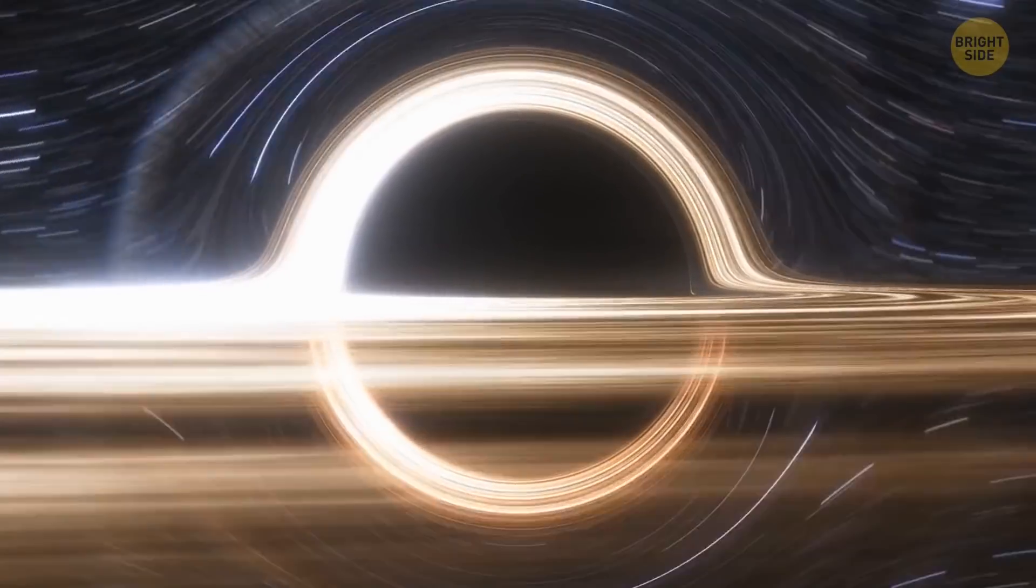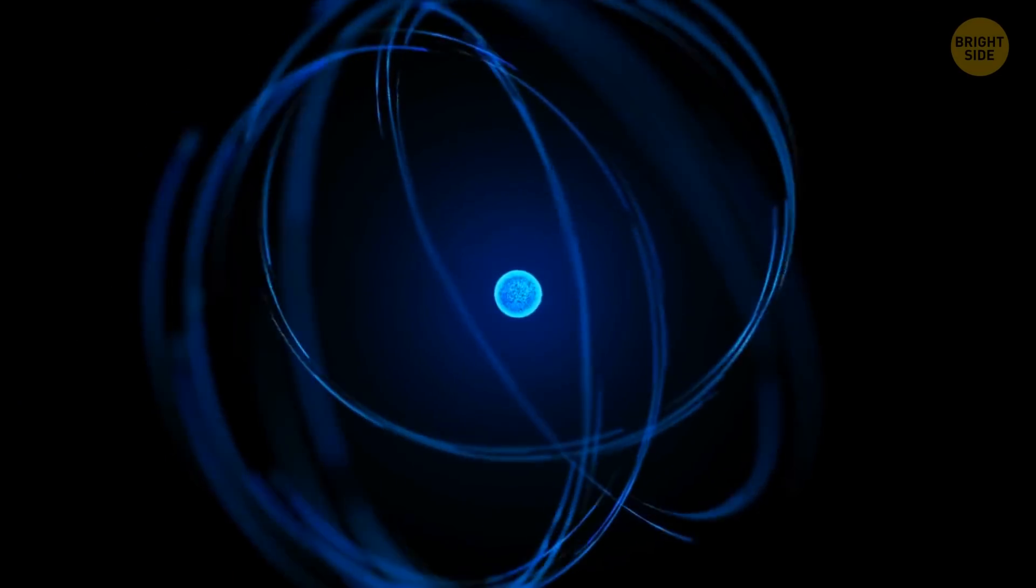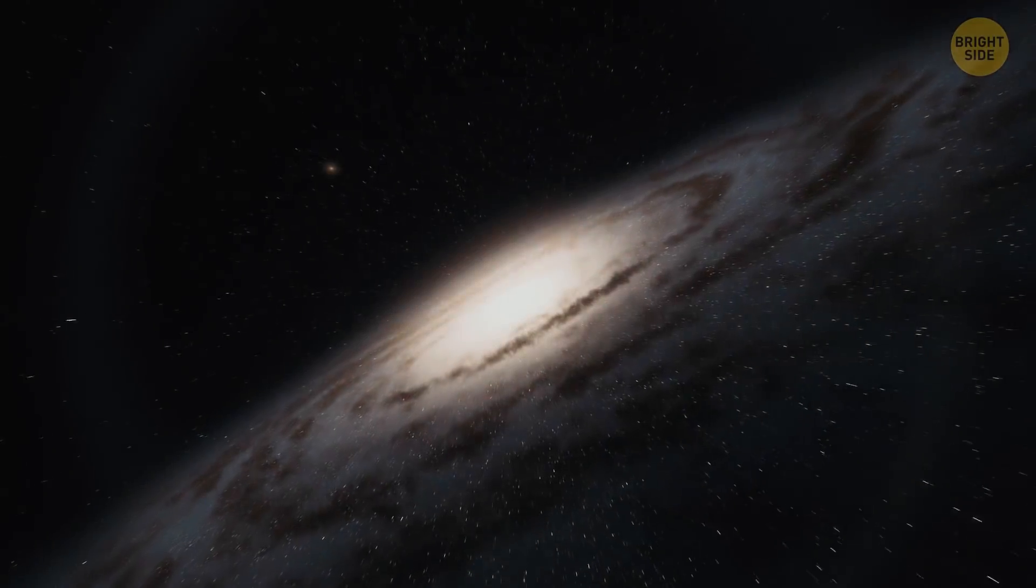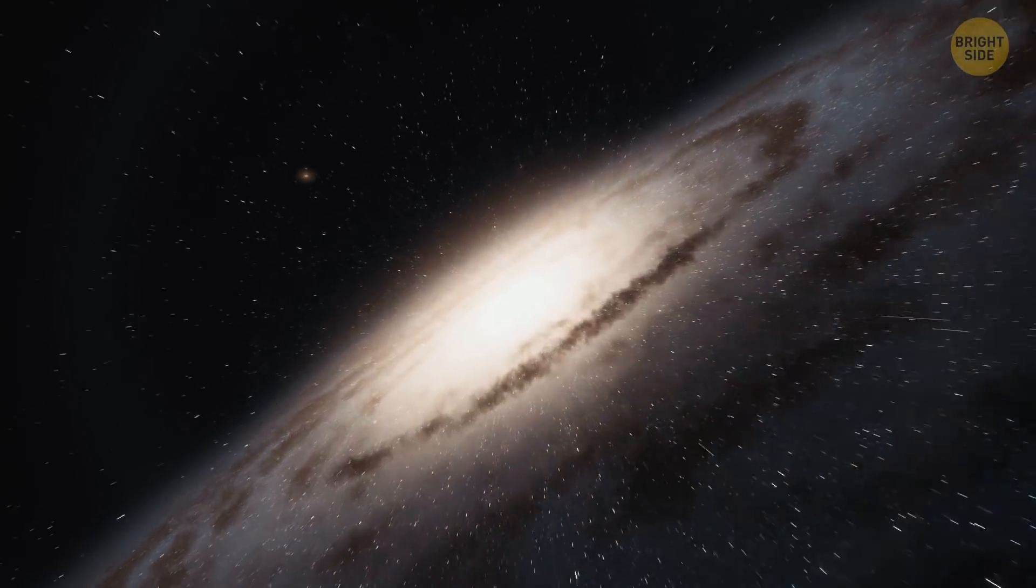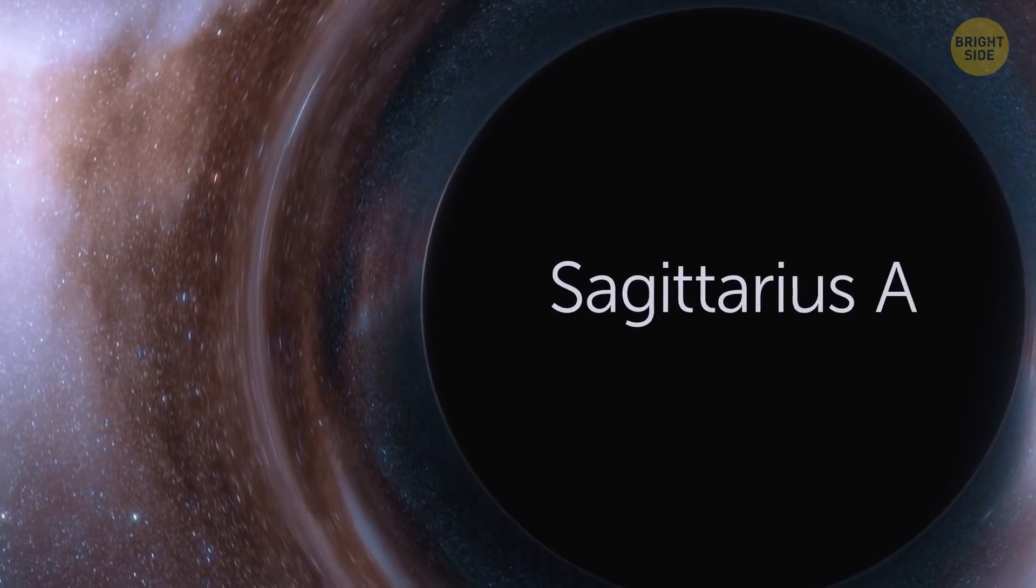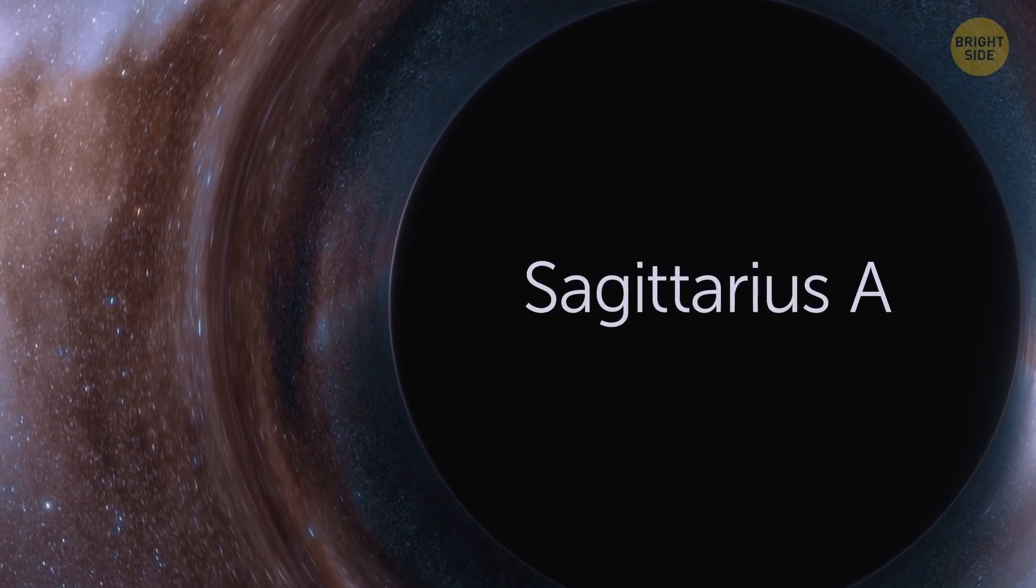Speaking of, a black hole that's as big as a single atom has the mass of a really big mountain. There's one at the center of the Milky Way called Sagittarius A. It has a mass like 4 billion suns, but luckily it's far away from us.